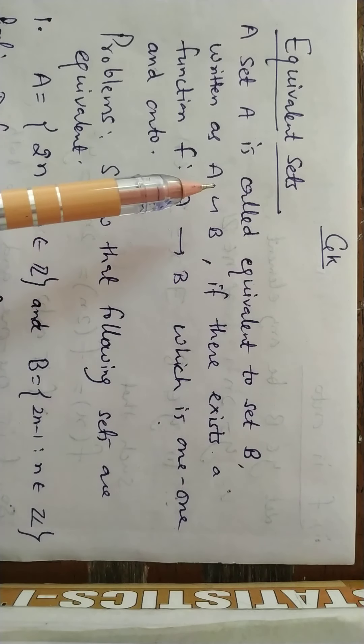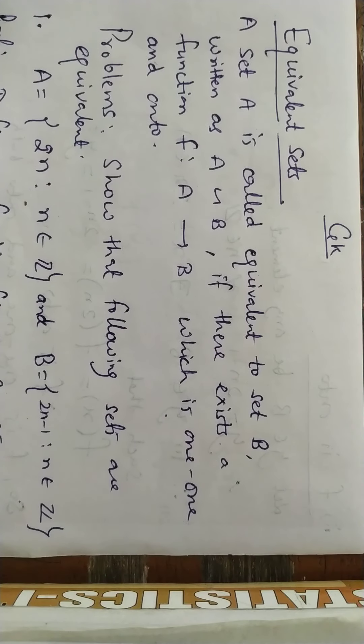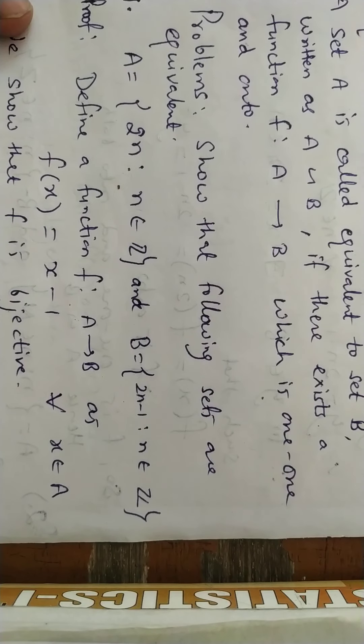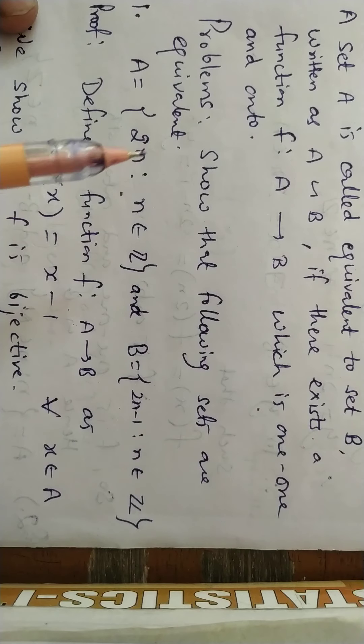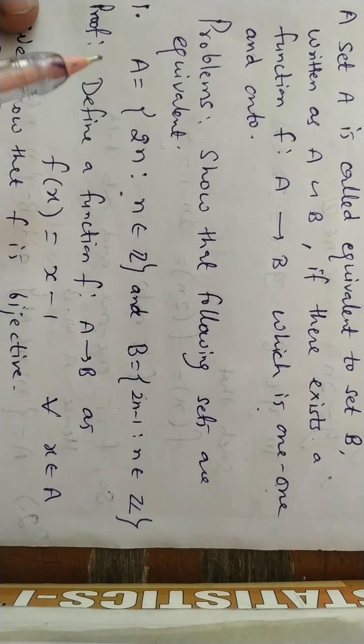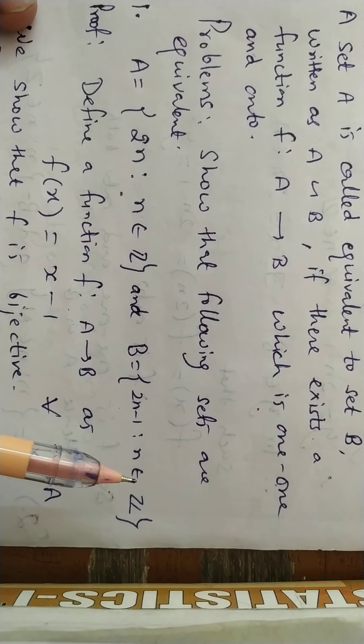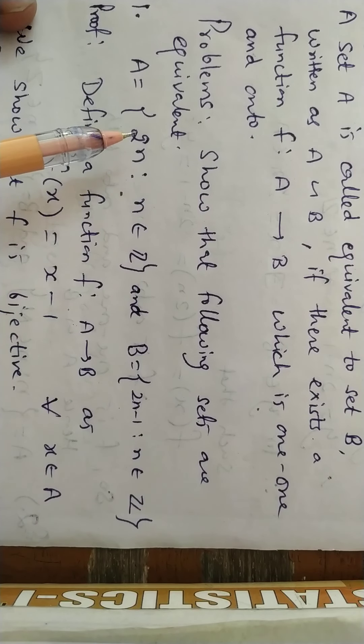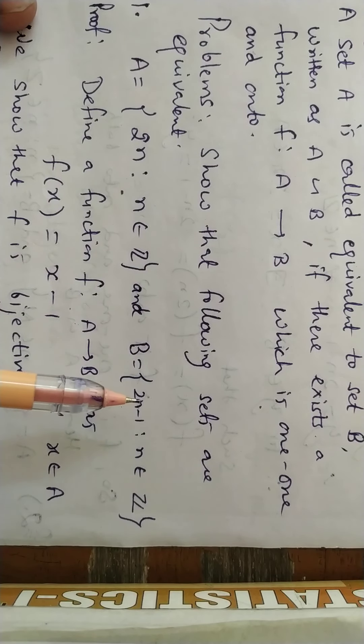So I will have problems in this video on how to check that two sets are equivalent. Show that the following sets are equivalent: Set A contains numbers of the form 2n where n belongs to integers, and set B contains numbers of the form 2n-1 where n belongs to integers. That is, A contains even integers and B contains odd integers.